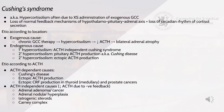Cushing's syndrome, also known as hypercortisolism, is caused by excess administration of exogenous glucocorticoids. It involves loss of the normal feedback mechanisms of the hypothalamo-pituitary-adrenal axis and loss of the circadian rhythm of cortisol secretion. Exogenous causes: chronic glucocorticoid therapy leads to hypercortisolism, decreasing ACTH and causing bilateral adrenal atrophy. Endogenous primary hypercortisolism is ACTH-independent — autonomous overproduction of cortisol by the adrenal gland causes ACTH suppression and atrophy of the contralateral adrenal gland, due to adrenal adenomas, adrenal carcinomas or macronodular adrenal hyperplasia.